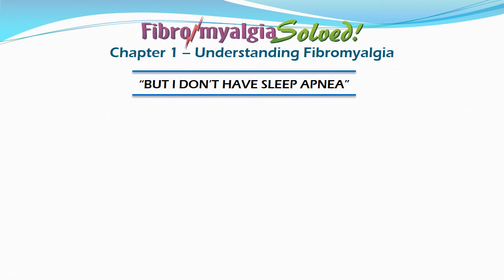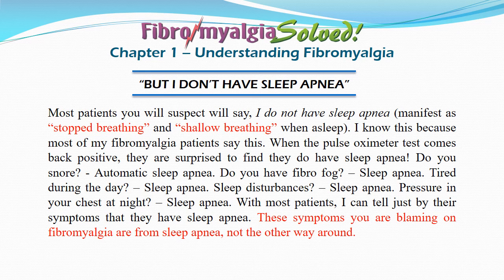This next section is very important because it is so common with patients. Most patients you suspect will say they do not have sleep apnea — which manifests two different ways: stopped breathing, which is the snoring and gasping for air that everybody is familiar with, and shallow breathing, which is the damaging type that people are unaware they are doing. When the pulse oximeter test comes back positive, they are surprised to find they do have sleep apnea. Do they snore? Sleep apnea. Fibro fog? Sleep apnea. Tired during the day? Sleep apnea. Sleep disturbances, pressure in the chest at night? Sleep apnea. These symptoms they are blaming on fibromyalgia are from sleep apnea — not the other way around.